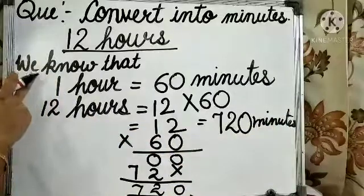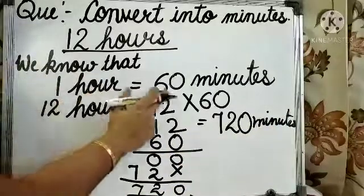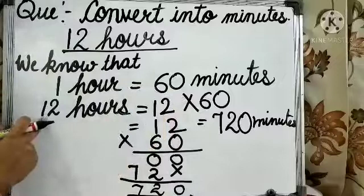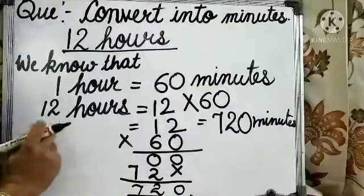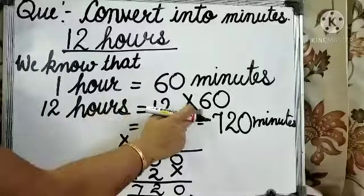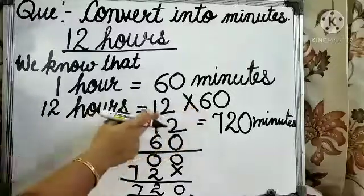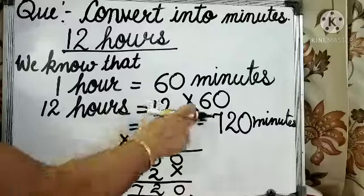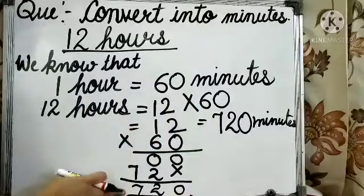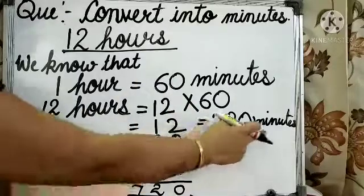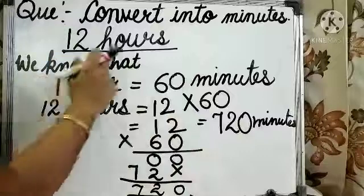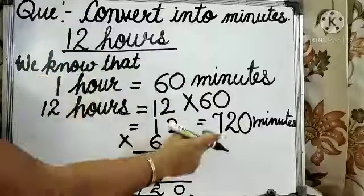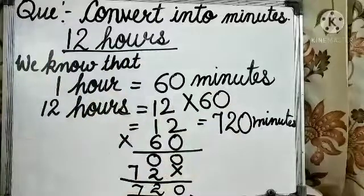Children, we already know that 1 hour is equal to 60 minutes. And here we have to convert 12 hours into minutes. So, we need to multiply 12 by 60, and here is the answer 720 minutes. So, 12 hours will have 720 minutes.